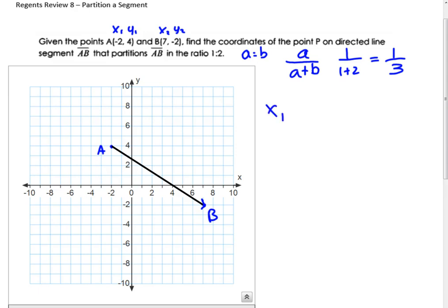So the formula is x1 plus 1 third times the change in x. And then it's the same thing for y, y1 plus 1 third times the change in y. So the change in x and the change in y, that's just x2 minus x1.